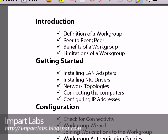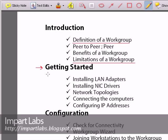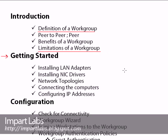The first thing you have to do to start setting up your workgroup is to check that every single computer in your network has at least one network card — a LAN adapter. You simply have to check that you have installed all of the LAN adapter drivers, and after that you have to choose between network topologies so that you can build up your workgroup.